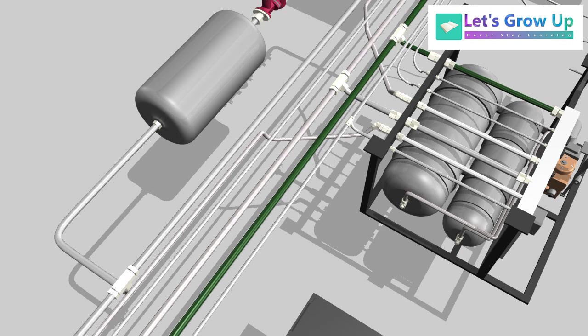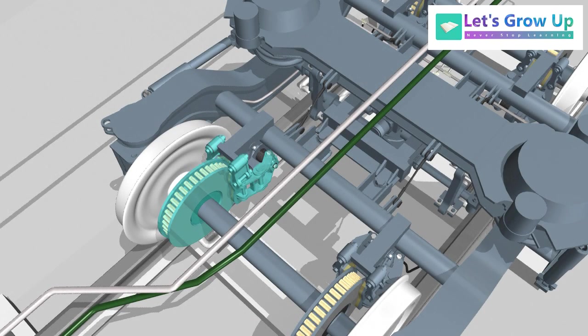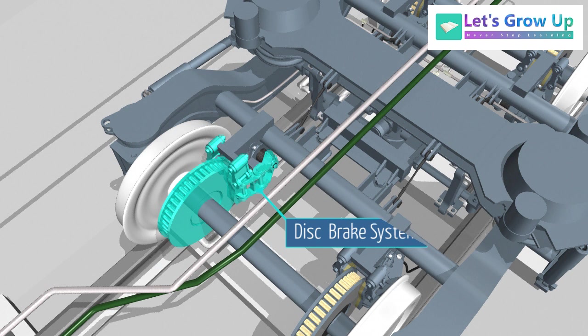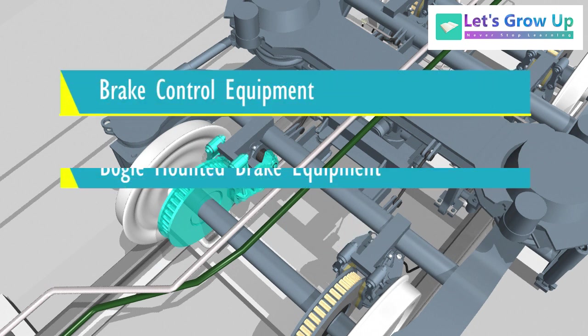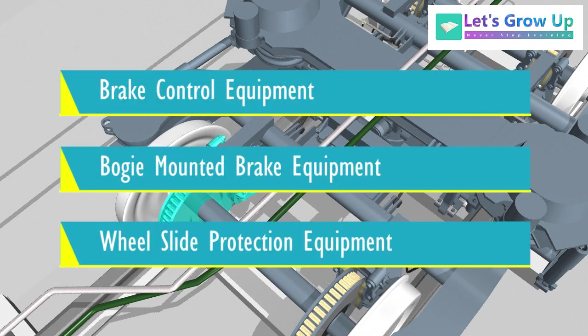Don't worry. Step by step, we will learn. The complete disc brake system can be classified from the following groups: brake control equipment, bogey-mounted brake equipment, and wheel slide protection equipment.